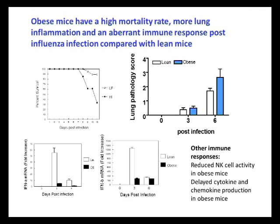When the lean and diet-induced obese mice were infected with influenza virus, we found that the obese mice had a high mortality rate, with about 60% of obese mice dying of the infection, as compared to 10% of lean mice. This increase in mortality was associated with an increase in lung pathology and a decrease in the production of messenger RNA for the antiviral cytokines interferon alpha and beta.